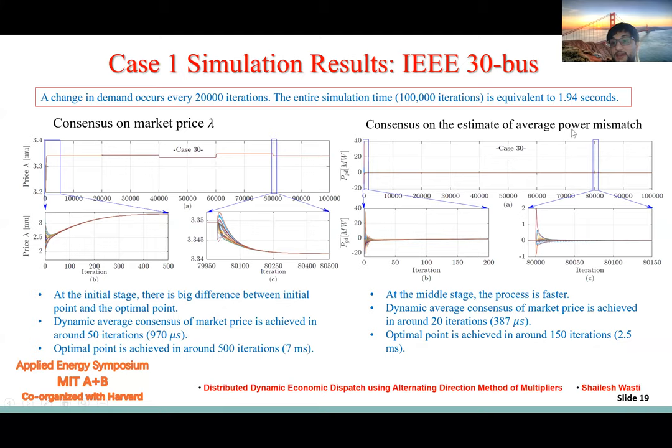Similar with the market price, this is the dynamic average consensus of power mismatch. For the power mismatch, each has a different estimate, but those all estimates go to zero. This shows that with a localized estimate, the network's power balance is ensured, and these are all happening in microseconds and milliseconds.